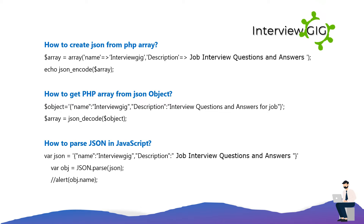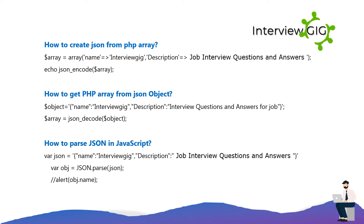What is JSON-RPC Java? JSON-RPC Java is a Java implementation of the JSON-RPC protocol. How to create JSON from a PHP array: $array = array('name' => 'InterviewGig', 'description' => 'Job Interview Questions and Answers'); echo json_encode($array). How to get a PHP array from a JSON object: $object = '{"name":"InterviewGig","description":"Interview Questions and Answers for Job"}'; $array = json_decode($object).